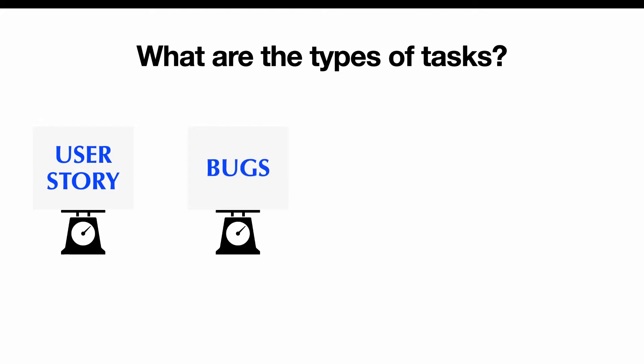The next most common tasks are bug tasks. These are anything that's broken on the site — something doesn't function, or say you merge a task and on another part of the website something got broken. Anything that's not working correctly results in bug tasks being created.